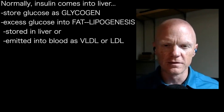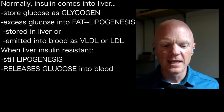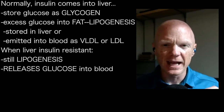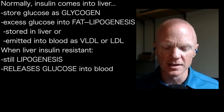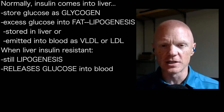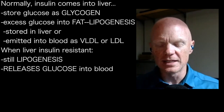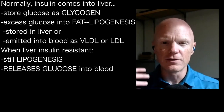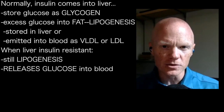When the liver becomes insulin resistant, insulin is still promoting lipogenesis — that biochemical pathway is not compromised and is not insulin resistant. However, glycogenesis, the stimulation of the liver to take in and store glucose, is compromised. So normally insulin would be telling the liver to store glucose, but that isn't working anymore. Even though insulin is high, the liver starts releasing glucose when it's supposed to be storing it.